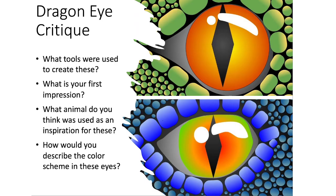On the following slide are some questions I just want you to think about — you don't have to write it down or turn it in. Just think: what tools do you think were used to create these? How did a student actually make these? What is your first impression — what do you like, what don't you like? What do you think you might do for yours? And third, what animal do you think was used as inspiration? Do you see certain animals after going through that guessing game? Maybe you're thinking, 'this one could be part this and part that.' Finally, how would you describe the color scheme in these eyes?